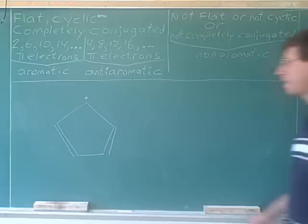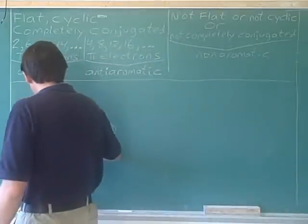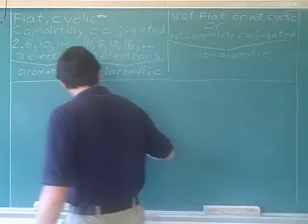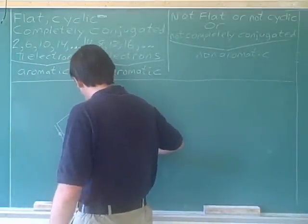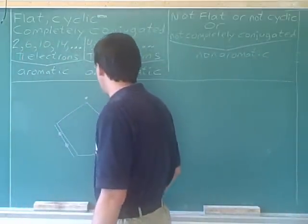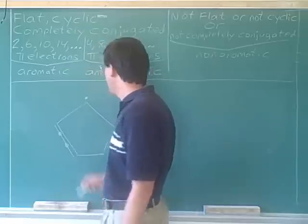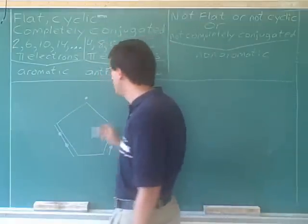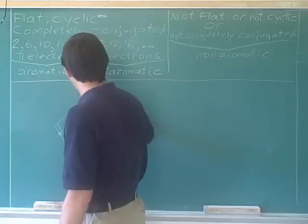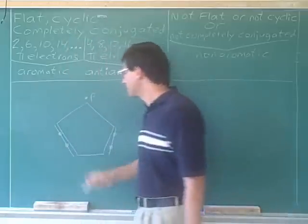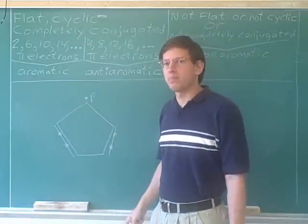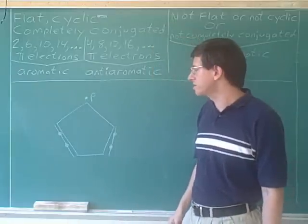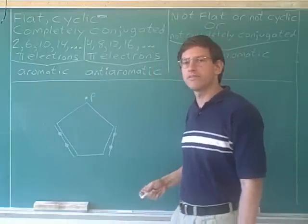Let's count the pi electrons. There are two pi electrons in this pi bond, two pi electrons in this pi bond, and what is the top carbon doing with its p orbital? It's going to put the unpaired electron in a p orbital. So how many pi electrons do we have total? Five.